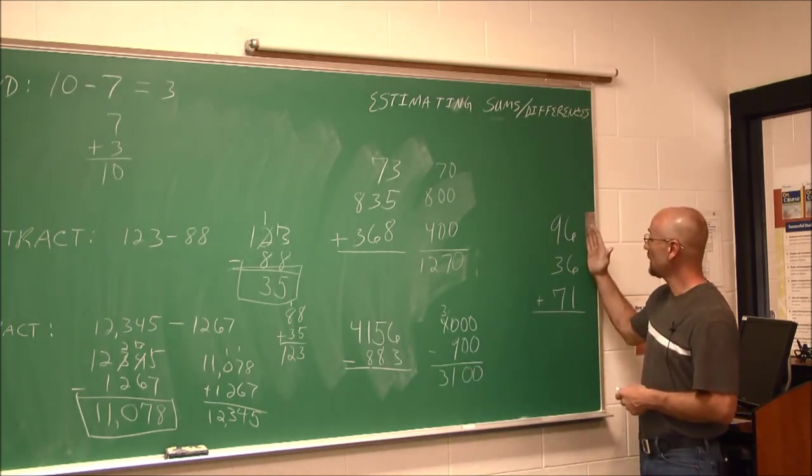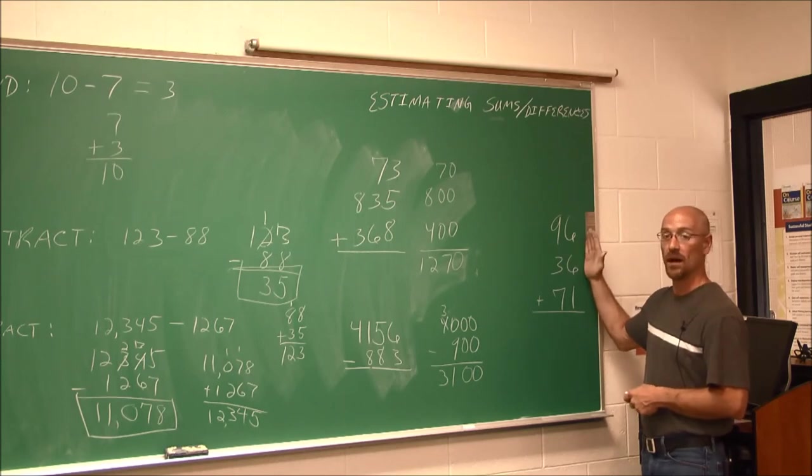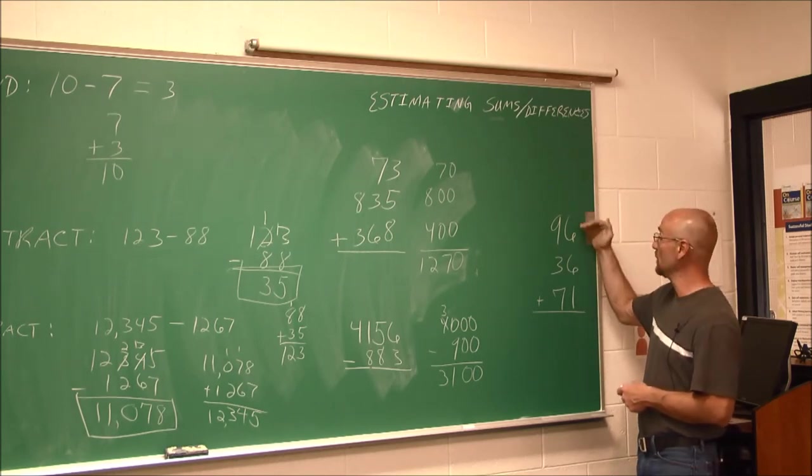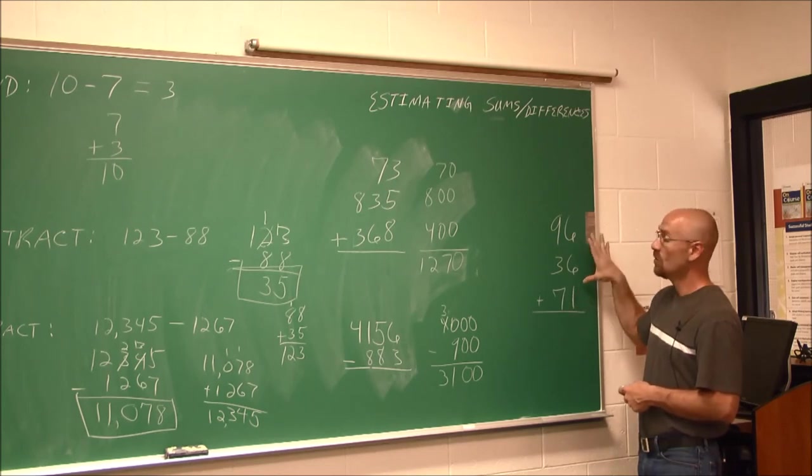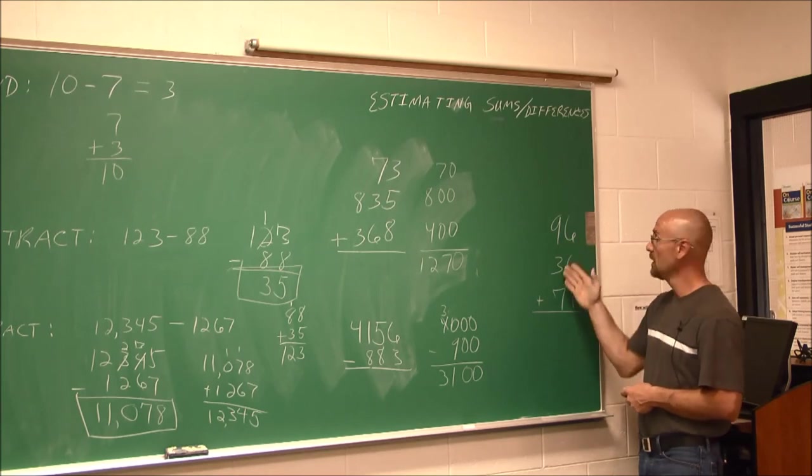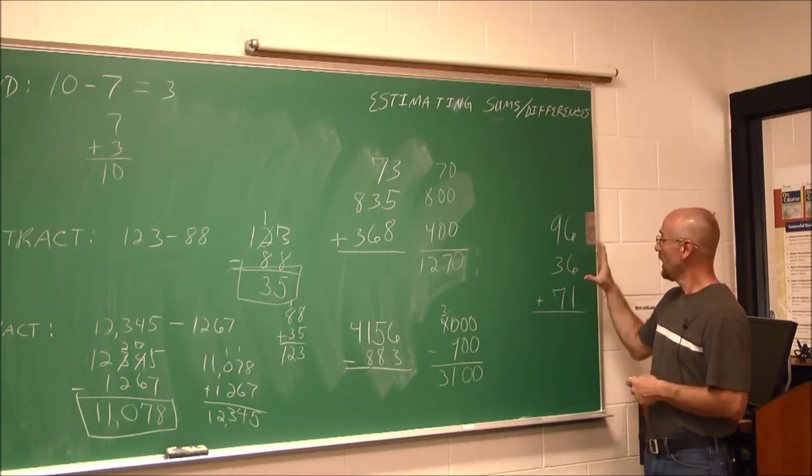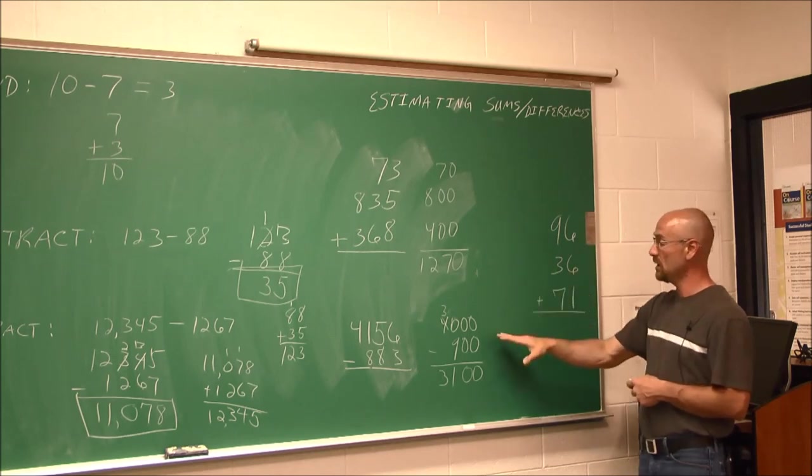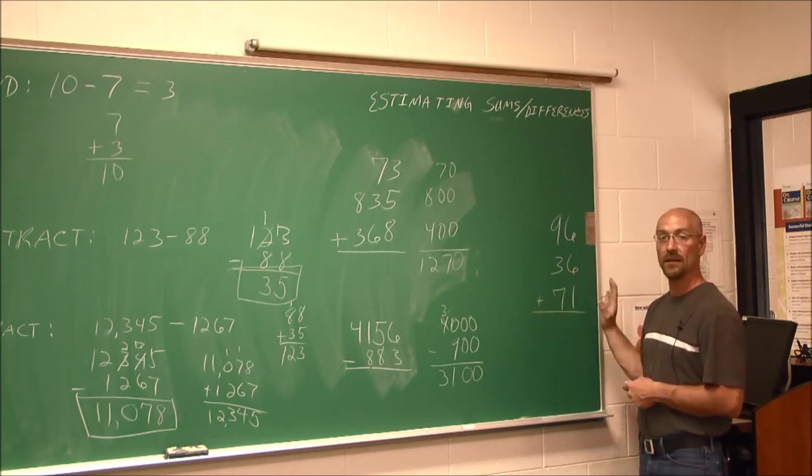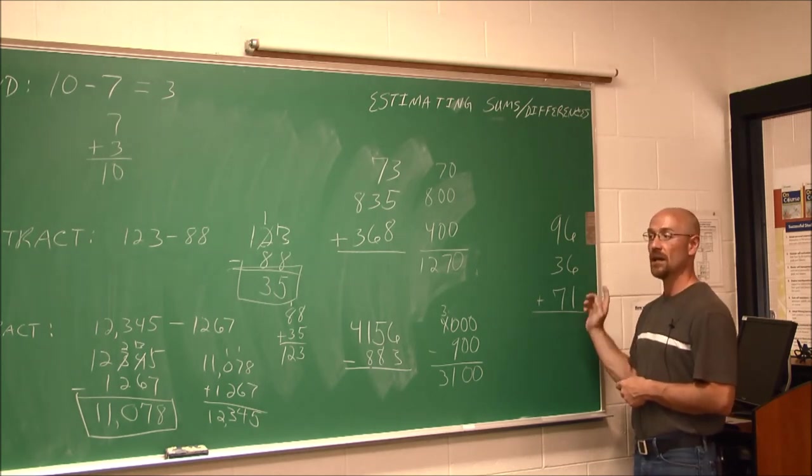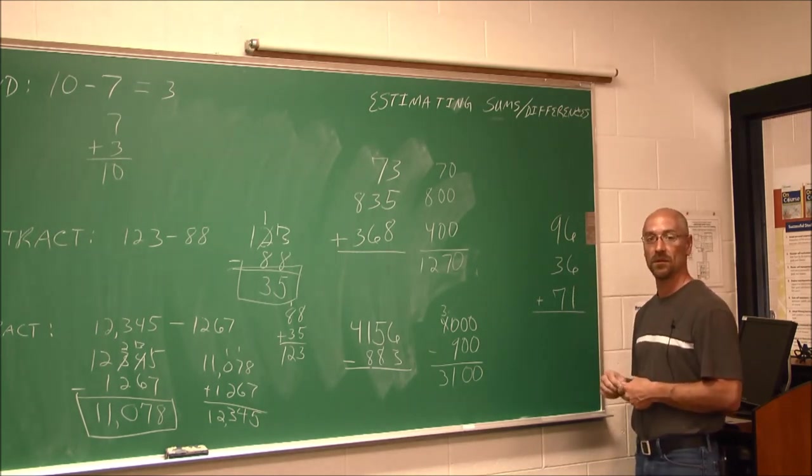All right, this last example here, this is for you to try. If you remember in the addition video, we added these numbers. Well, I want you to estimate these numbers. Round to the leftmost place and find its estimated sum. So round these values, just like we did in this example, and find the estimated sum of this series of numbers. Check it with the answer you got in the previous video.